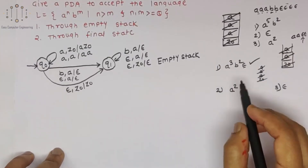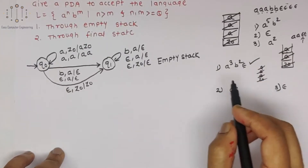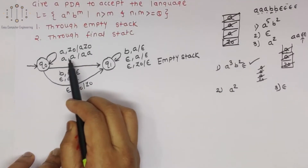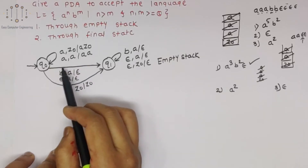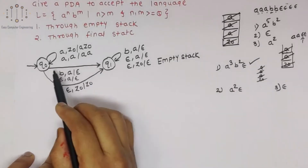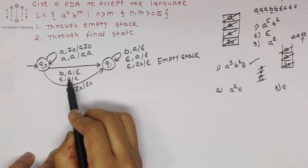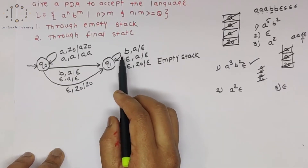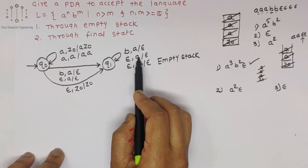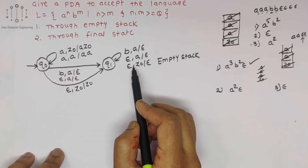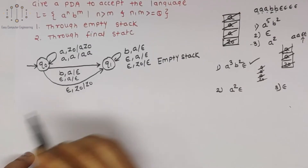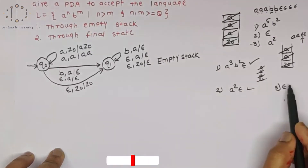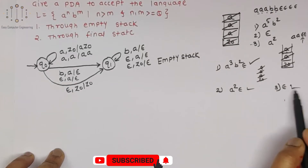For a^2: push first a, push second a. Next is epsilon — for epsilon with a in stack, pop it. Then for next epsilon, pop the second a. Later Z0 is in stack, pop it — empty stack. So this string is also accepted, reaching empty stack through these transitions.